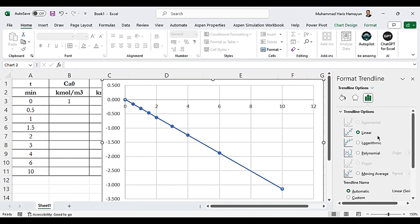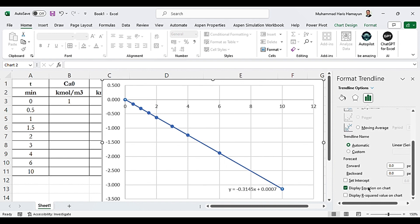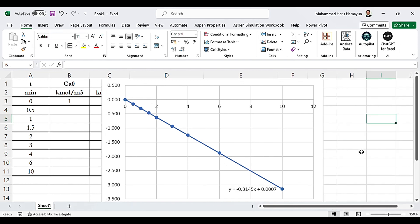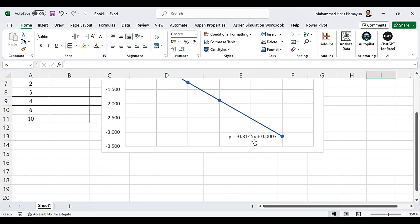And now right click on this curve. Add trendline. It will be a linear line as you can see. And display equation on the chart. So as you can see the answer is minus 0.3145. And if you see y is equal to minus k into t. Y was natural log of C0 minus C of C over C0 minus k into t. So t is x. Y is natural log of C0 minus C of C over C0. And this minus M is actually minus k. So the M value is. So the M or k is 0.3145. One per minute. So that is the final part of this numerical.